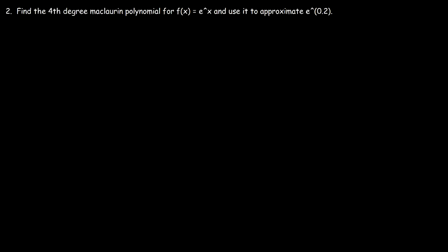Now let's work on a new problem: find the fourth degree Maclaurin polynomial for f(x) = e^x and use it to approximate e^0.2. The Maclaurin polynomial is basically the Taylor polynomial centered at 0 — that's the only difference. We use the same formula but with c = 0.